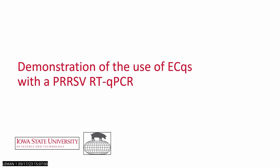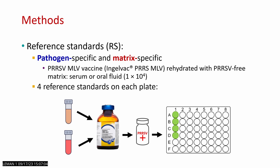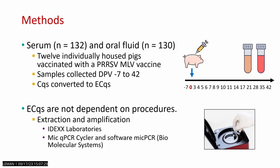We generated reference standards that were pathogen- and matrix-specific by rehydrating a PRRS MLV vaccine with PRRS-free matrix, either serum or oral fluid, diluted down to 10 to the minus 4, and included in 4 replicates on every plate. We tested serum or oral fluid samples from 12 individually housed pigs vaccinated with a PRRS MLV vaccine. Their CQs were converted to ECQs using the equation shown. ECQs are not dependent on procedures, but for this study we used reagents from MIDEX and the MEQ QPCR cycler.